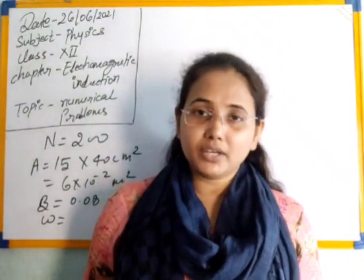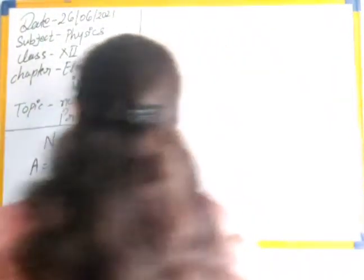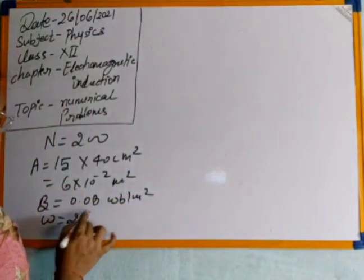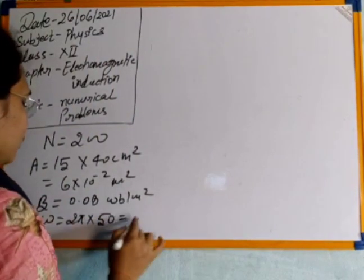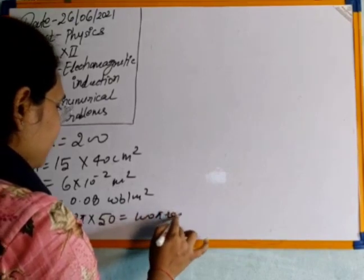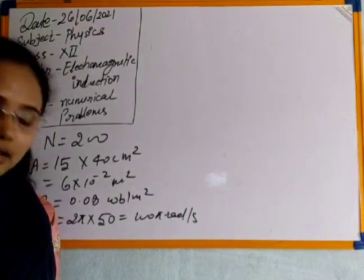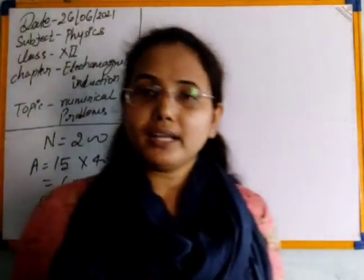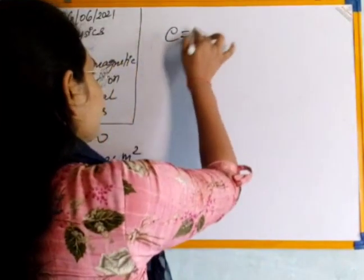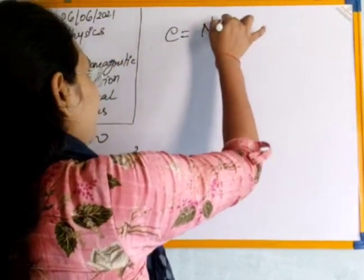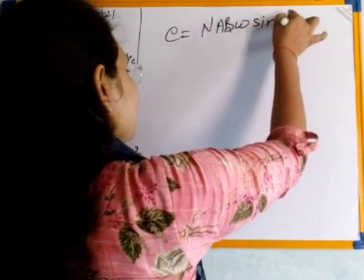Given data continued: B = 0.08 Weber per meter square, and the coil makes 50 revolutions per second, so f = 50 Hz. The angular frequency omega = 2πf = 2π × 50 = 100π radians per second. The formula for induced EMF when the orientation of the coil changes is: e = NABω·sin(ωt).